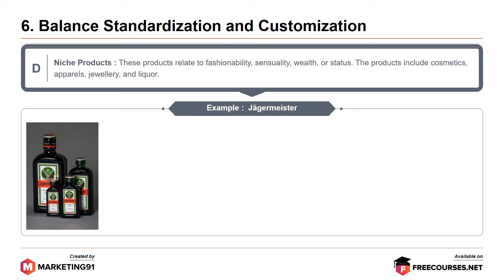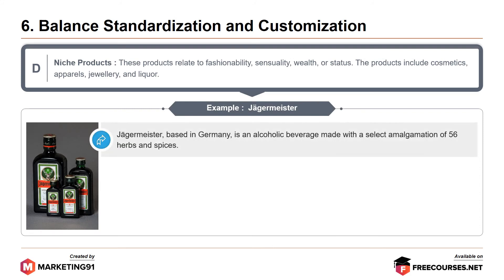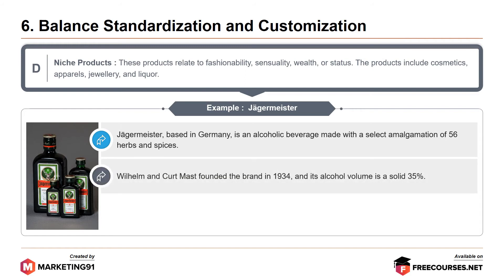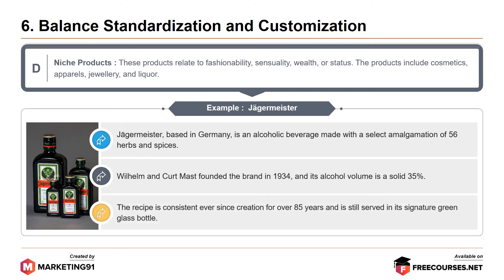An example of a niche product is Jägermeister. Based in Germany, Jägermeister is an alcoholic beverage made with a select combination of 56 herbs and spices. Wilhelm and Kurt Mast founded the brand in 1934, and its alcohol volume is a solid 35%. The recipe has been consistent since its creation over 85 years ago and is still served in a signature green glass bottle.